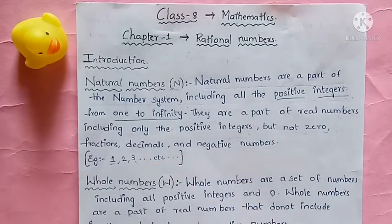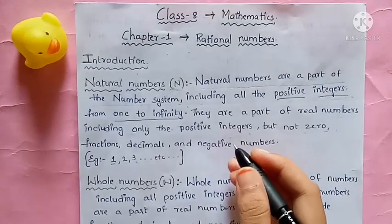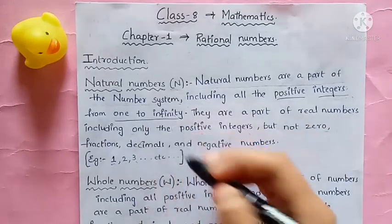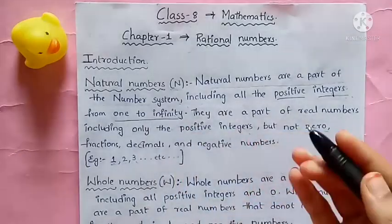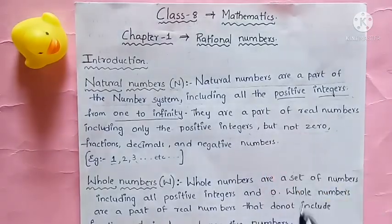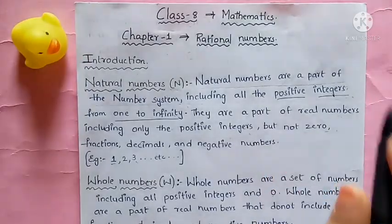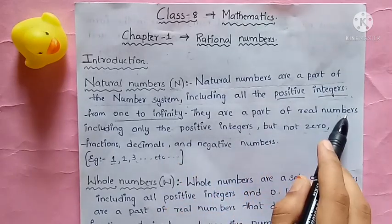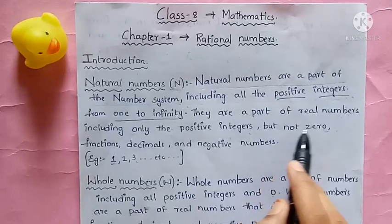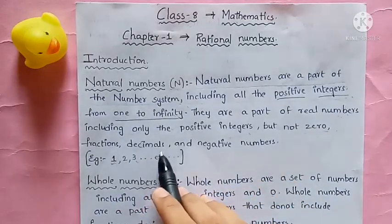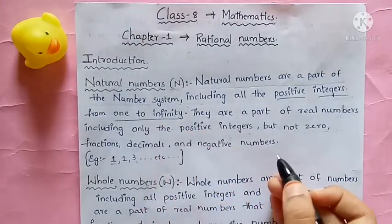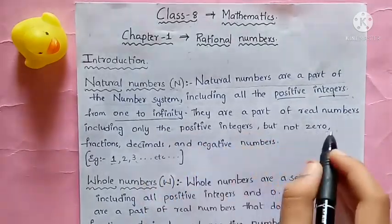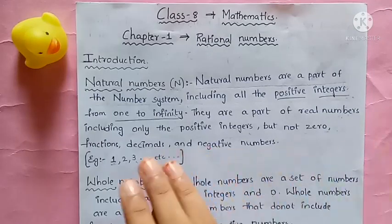So first, natural numbers. Natural numbers are a part of the number system including all the positive integers from 1 to infinity. They are part of real numbers including only the positive integers, but not 0. Natural numbers do not include 0.